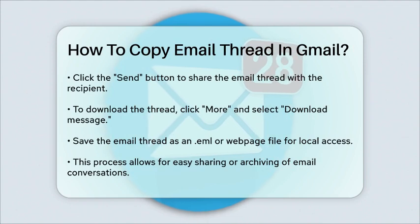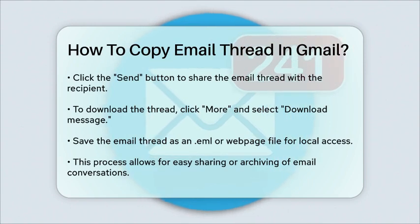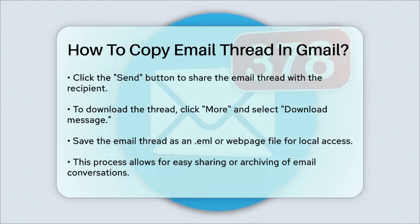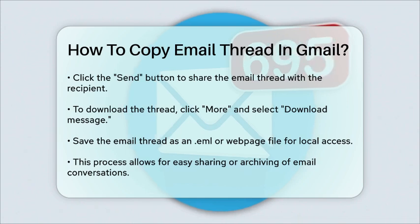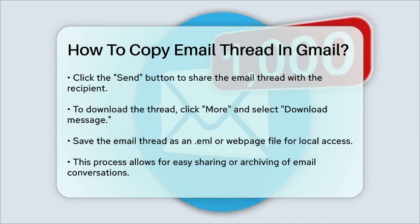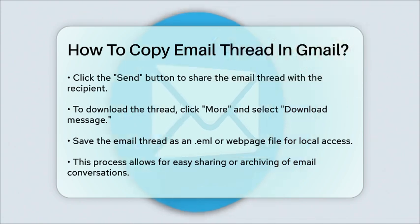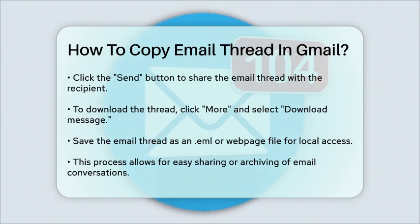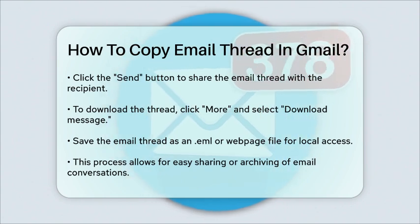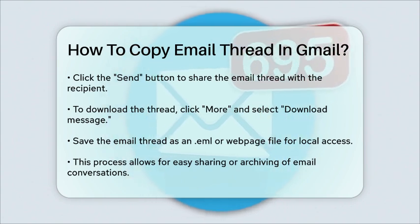So to recap: enable Conversation View, open the thread, click More, and then Forward All to copy and send the entire email thread, or use Download Message to save it locally. This way you can easily share or archive your email conversations.